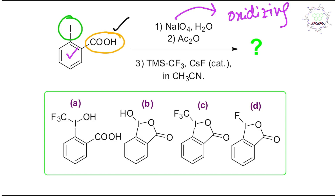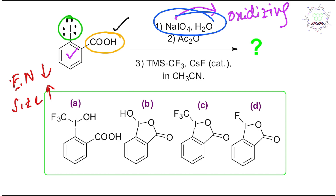If you look at this iodine molecule it's pretty interesting. It has three lone pairs of electrons. It's a group 17 atom — a halogen — and among all other halogens, iodine has the lowest electronegativity and the highest size. So that's why it is easier to oxidize, and that's actually what the reaction does here.